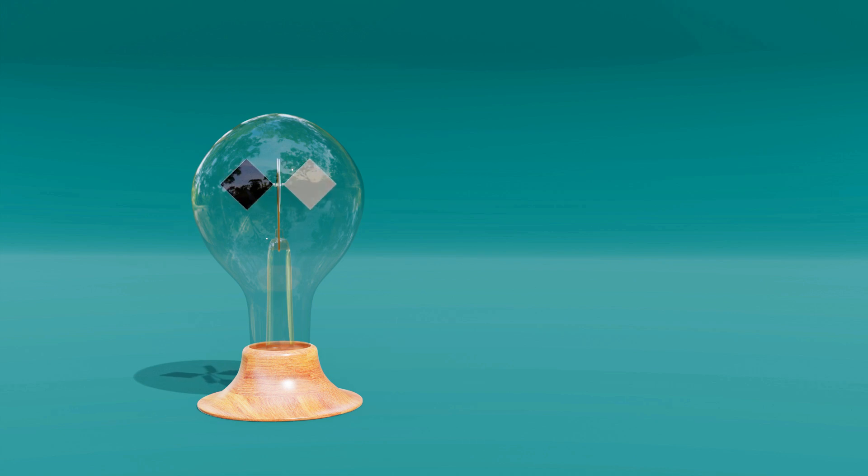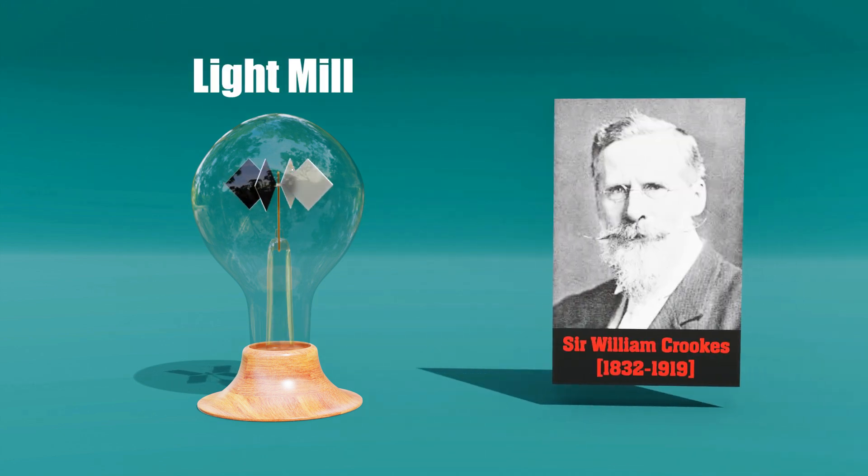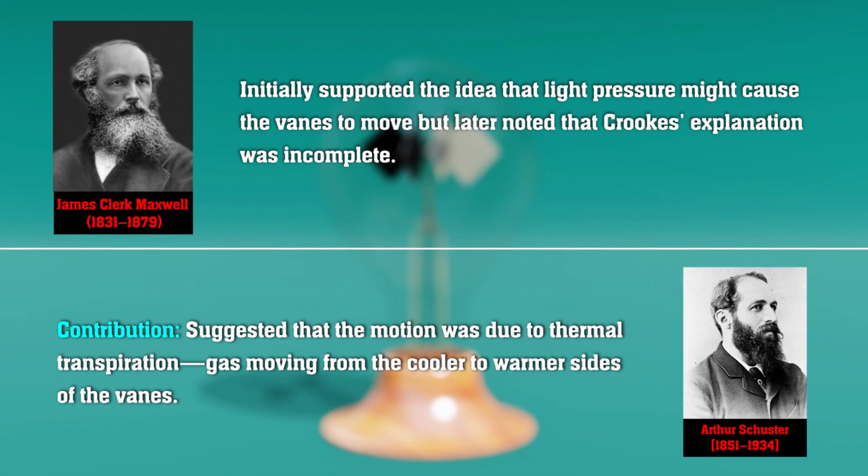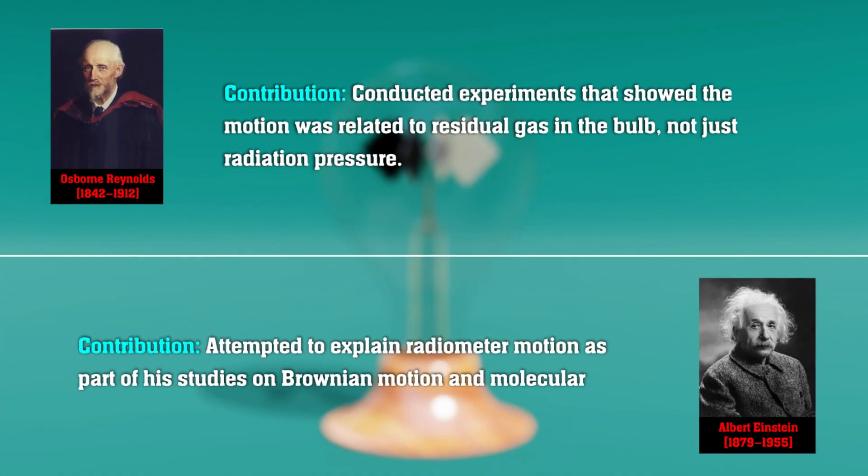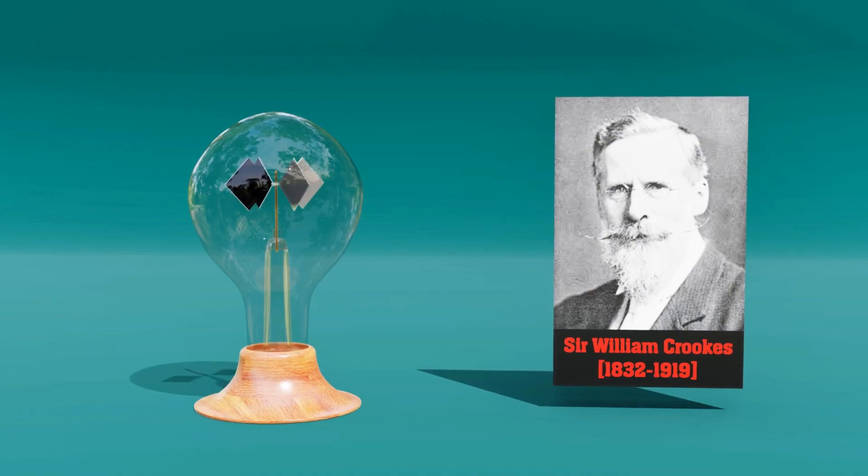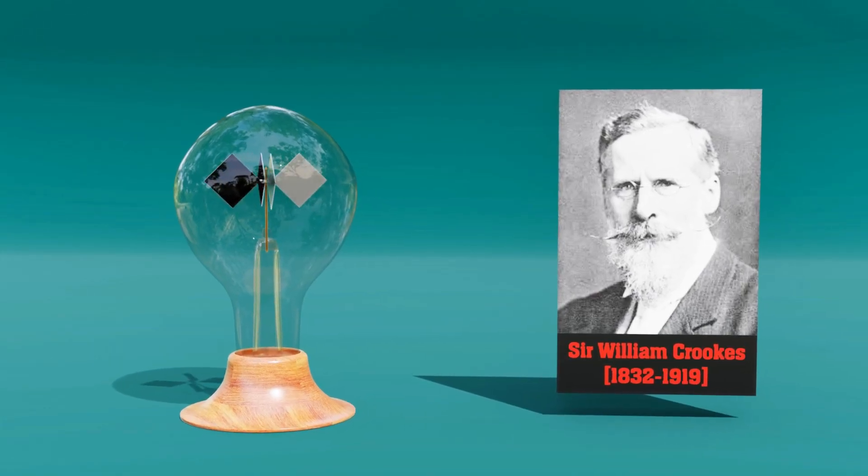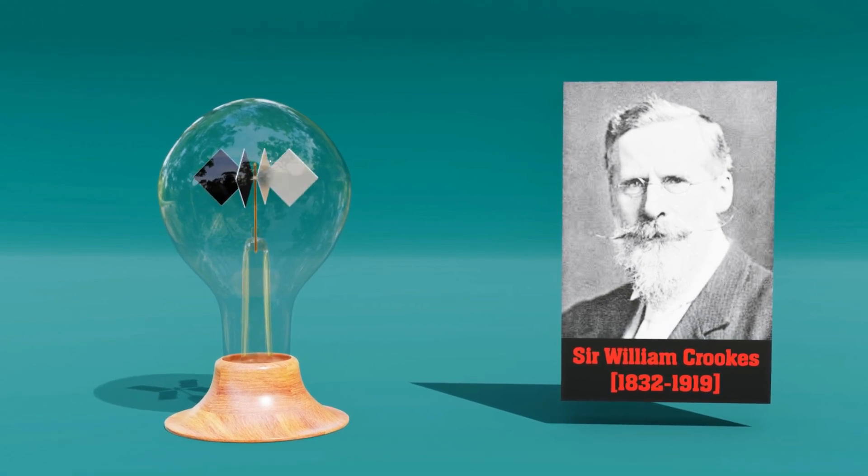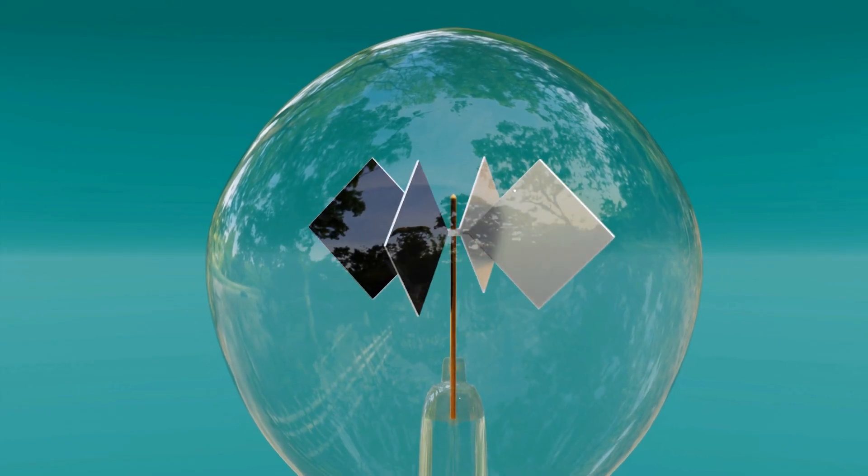The Crookes radiometer, also known as the light mill, was invented in 1873 by British physicist Sir William Crookes. Its inner workings have puzzled scientists for over a century, and even today its exact mechanism is still debated. In fact, Crookes himself couldn't fully explain how it worked.